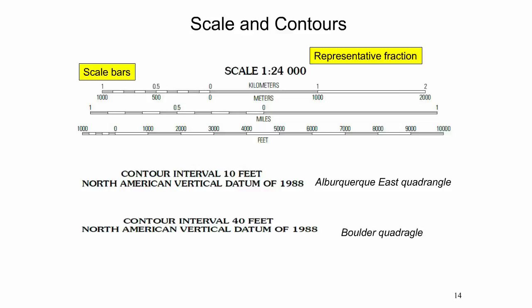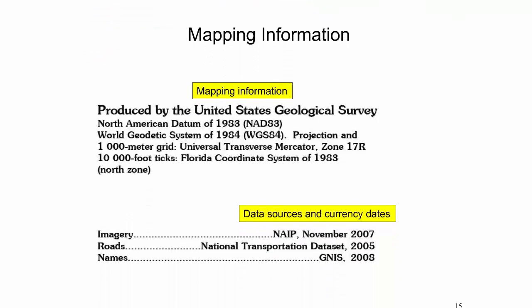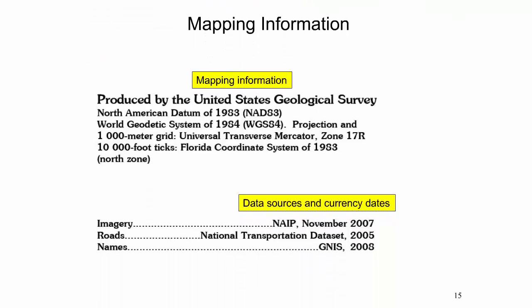Below the scale bars, one can find the basic contour interval and vertical datum used for the contour lines. The contour intervals can vary between different US Topo maps. For example, the Albuquerque East quadrangle uses a 10-foot contour interval, while the Colorado quadrangle uses a 40-foot contour interval. At the lower left part of the map collar, mapping information is provided, including map projection, horizontal datum, state plane zone, and grid information.